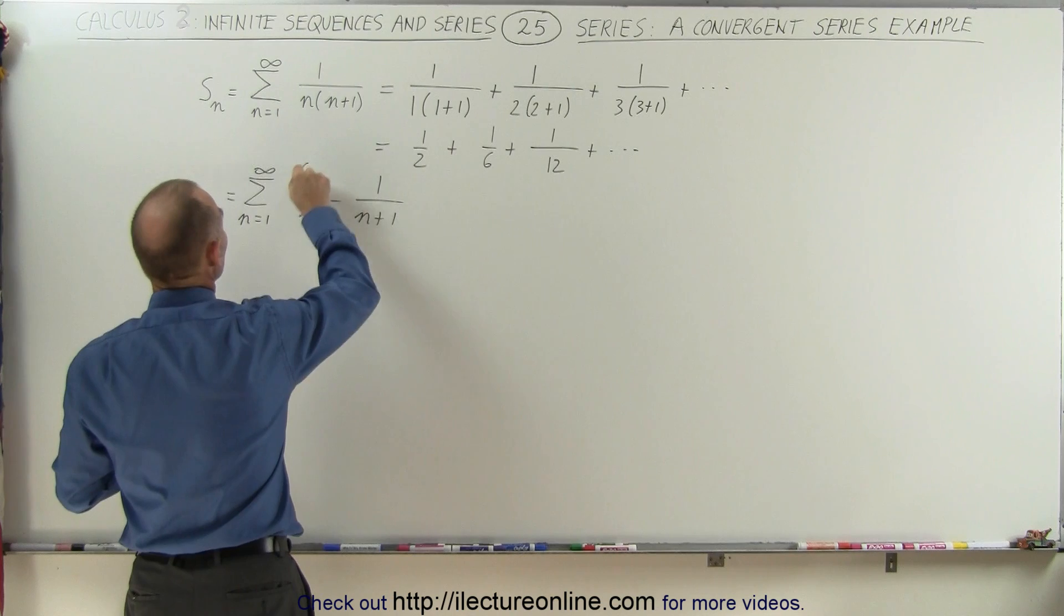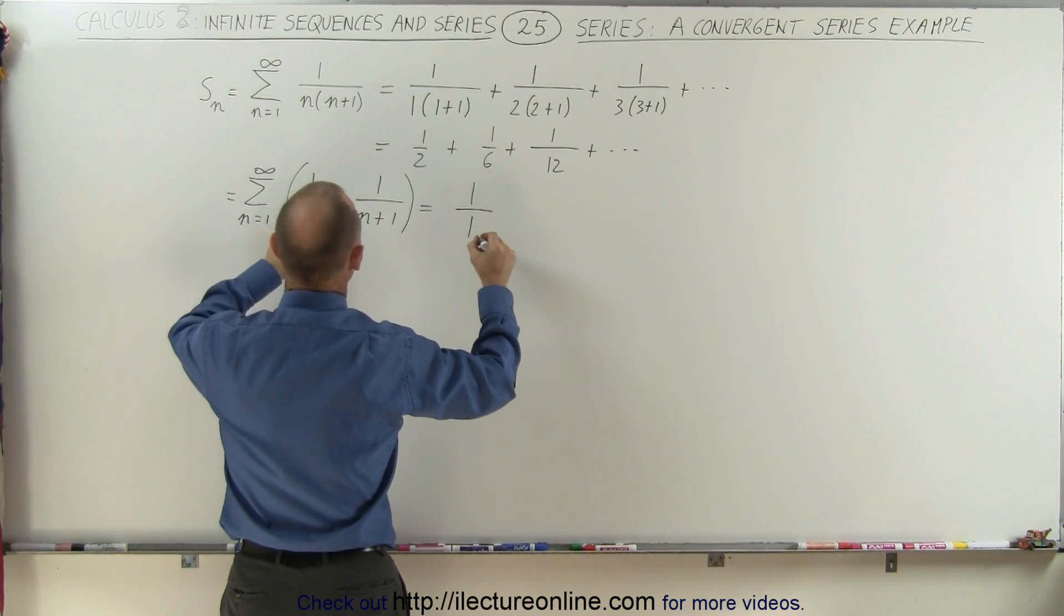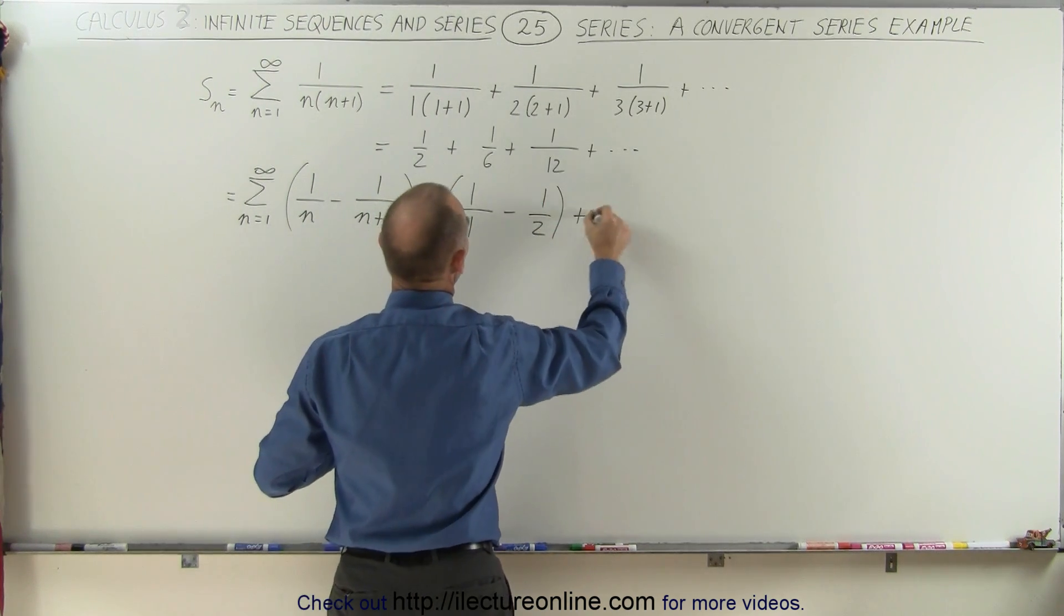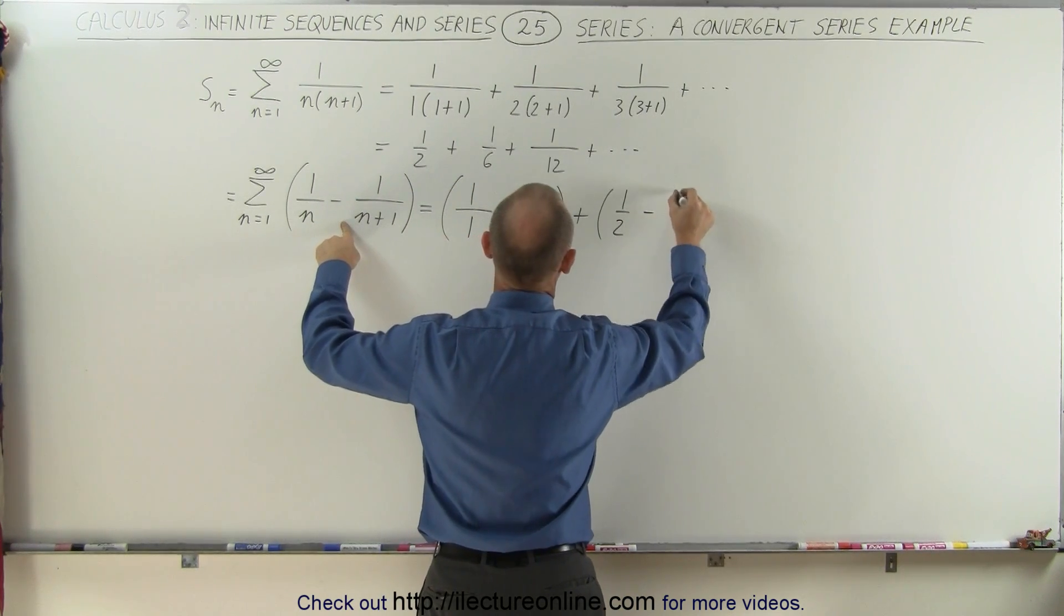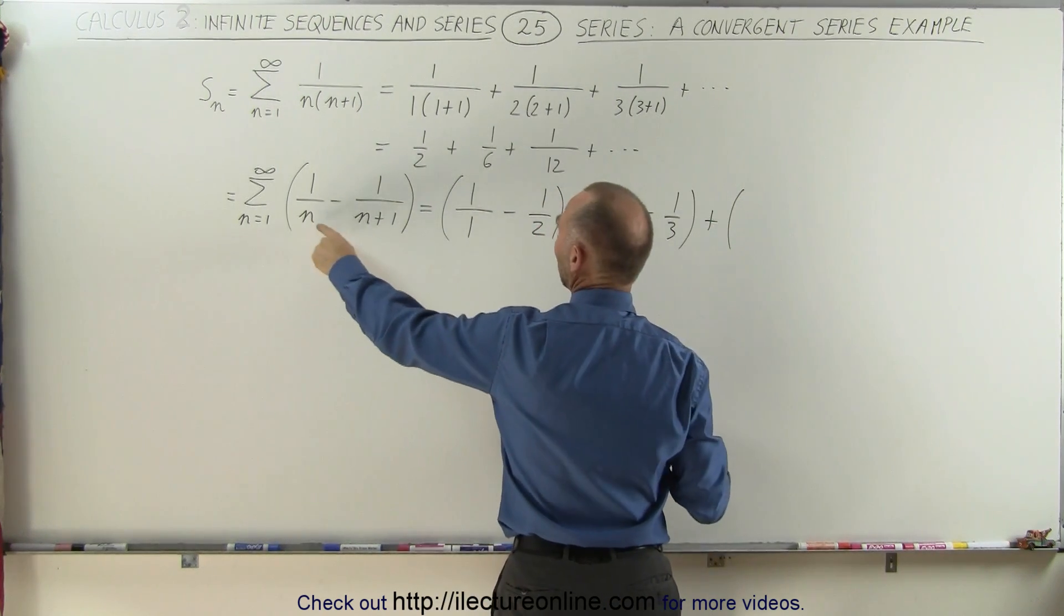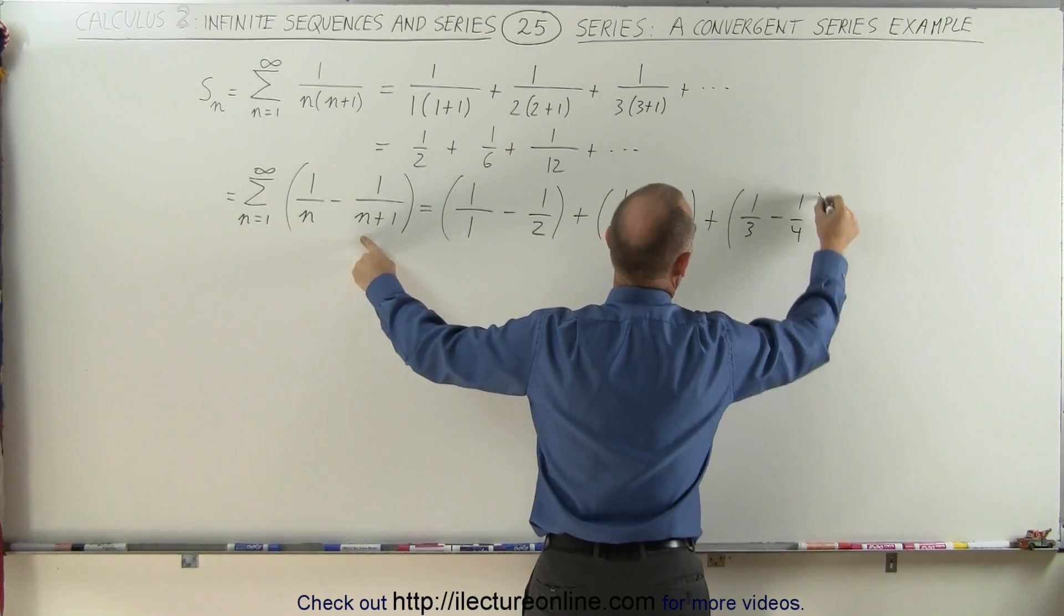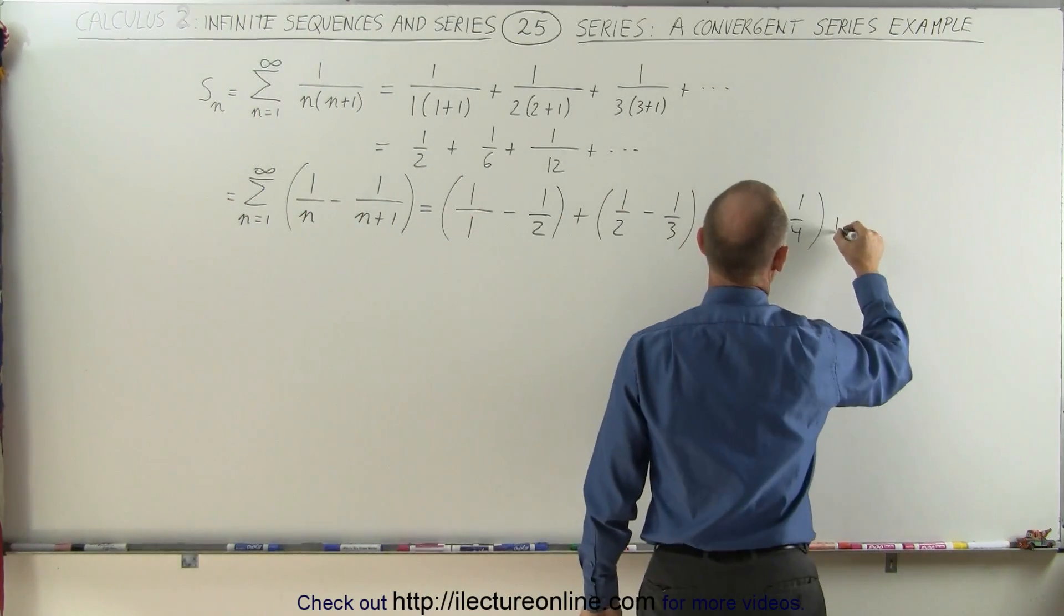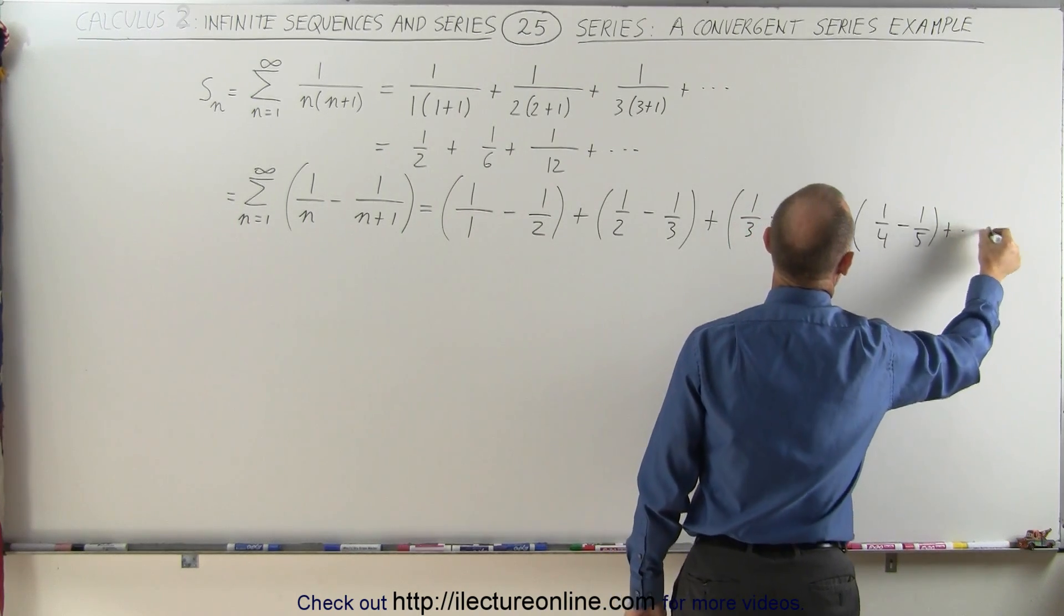So we're going to now write it as an infinite sum like this. This becomes equal to 1 divided by 1, when n equals 1, minus 1 divided by 2. And then we add that to when n is equal to 2, 1 divided by 2, minus 1 divided by 3. And then we add that to the next term when we get 1 over 3 minus 1 over 4. And you can see the pattern that develops. Then the next term would be plus 1 over 4 minus 1 over 5, and so forth.